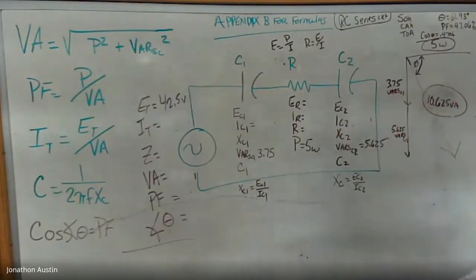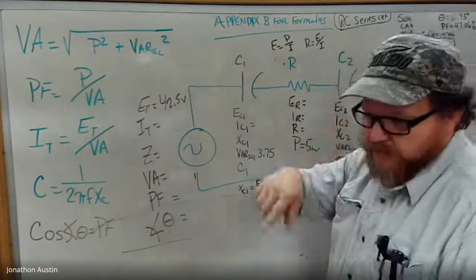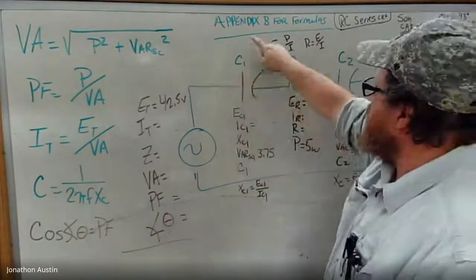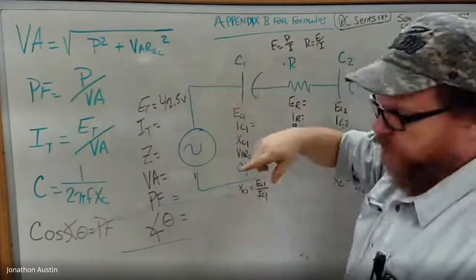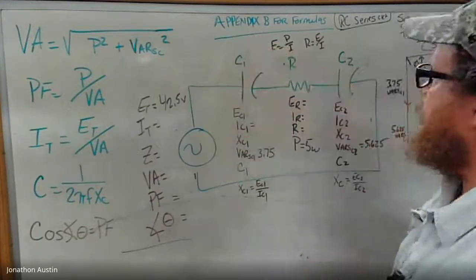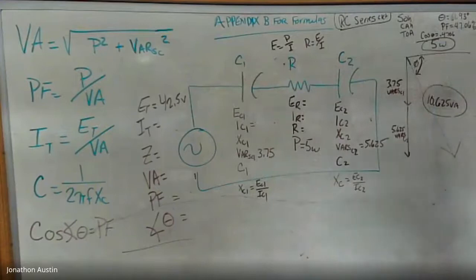Alright, so we're going to go over RC series circuits. One thing you're going to need to do, if you have Hermann's 7th edition, or Del Mar's, depending on how your school calls it, Appendix B for formulas is the place to get the best formulas out of. We're going to work this example problem.